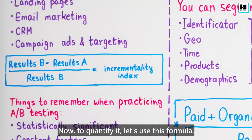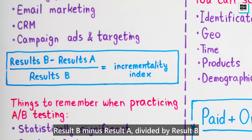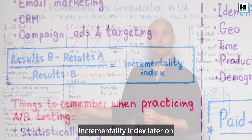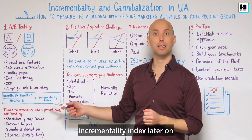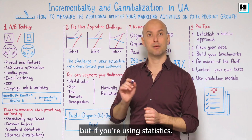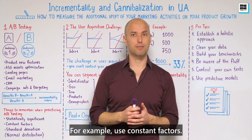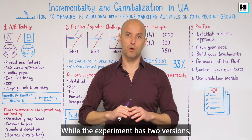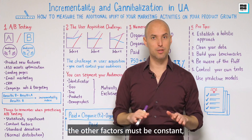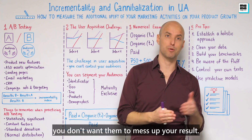Now, to quantify it, let's use this formula: Result B minus Result A, divided by Result B, equals the incrementality index. We're going to talk about the incrementality index later on. But if you're using statistics, try to practice it right. For example, use constant factors — while the experiment has two versions, the other factors must be constant so you don't want them to mess up your results.